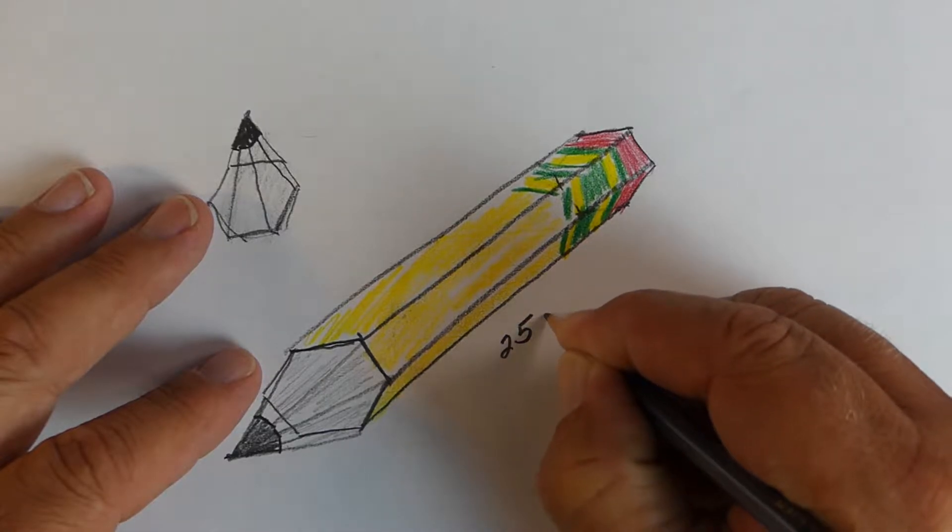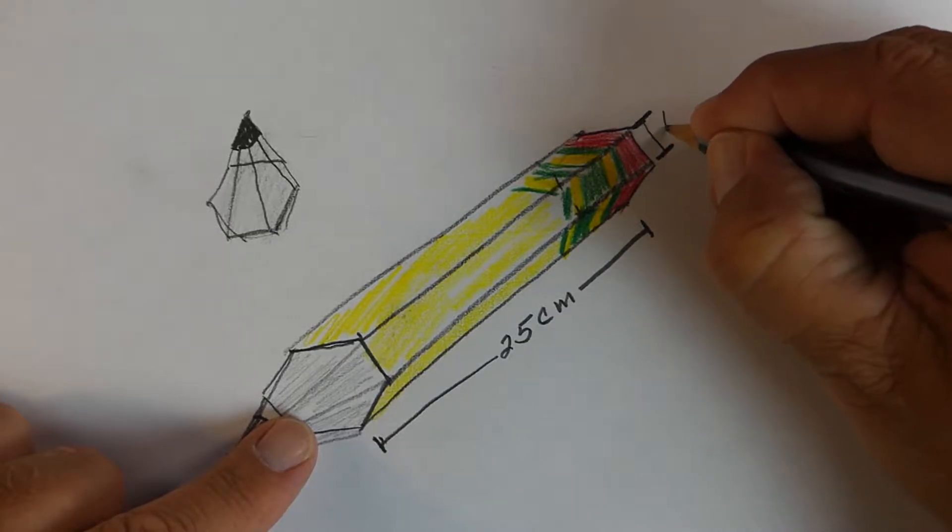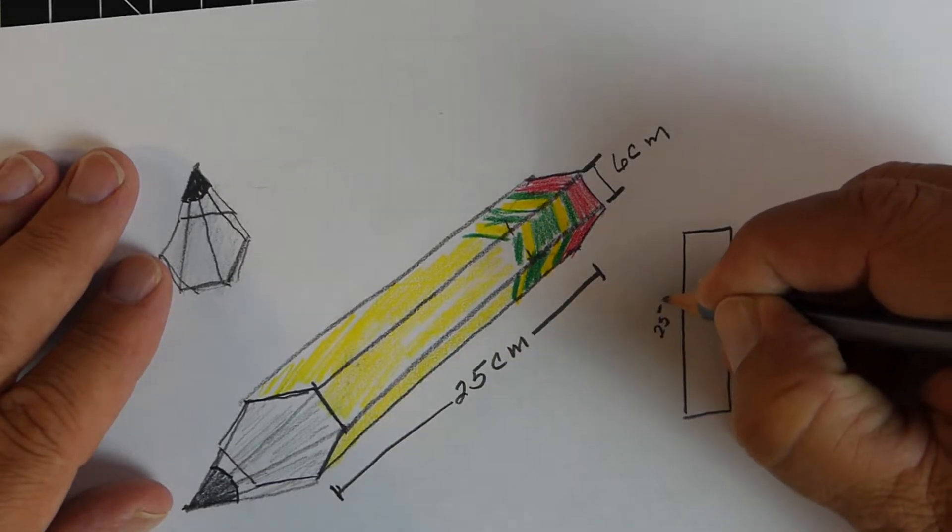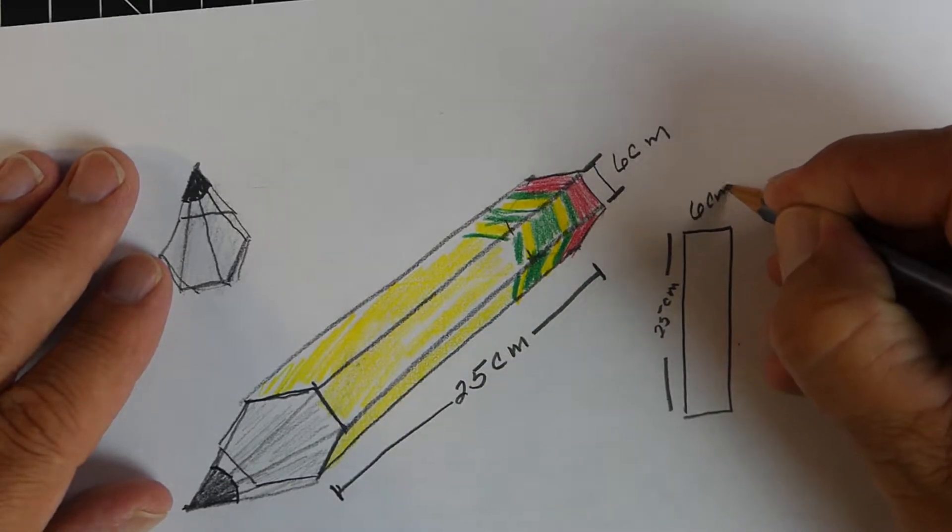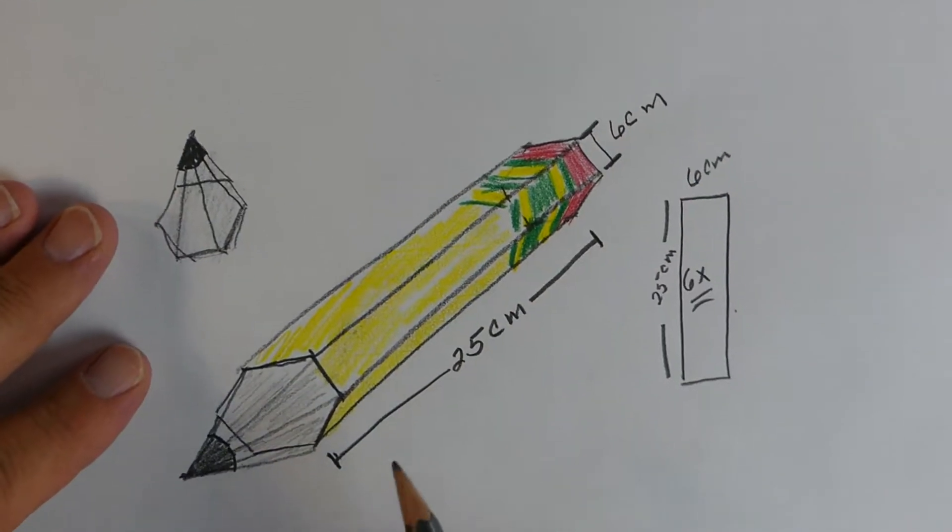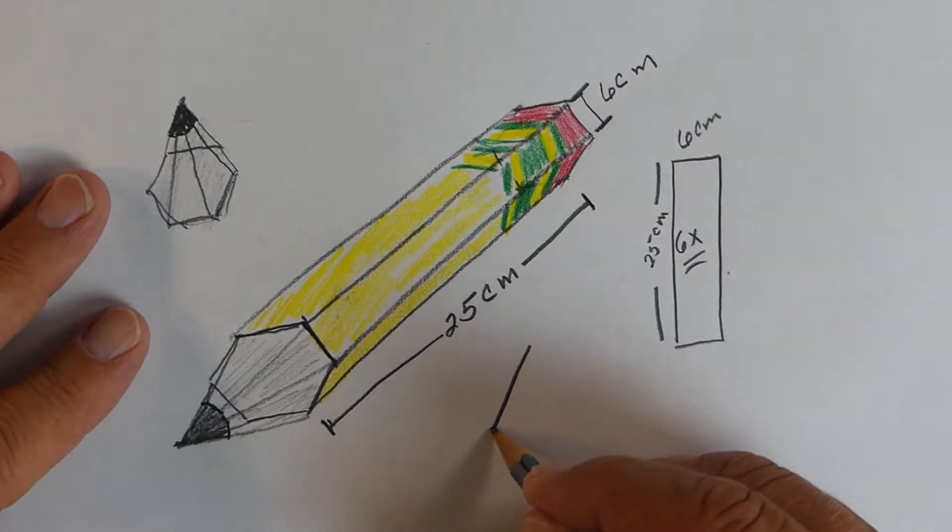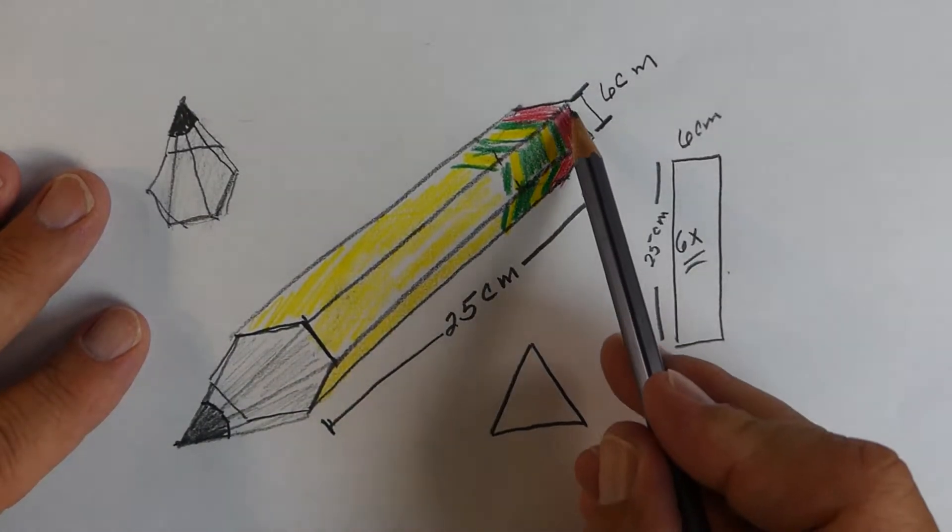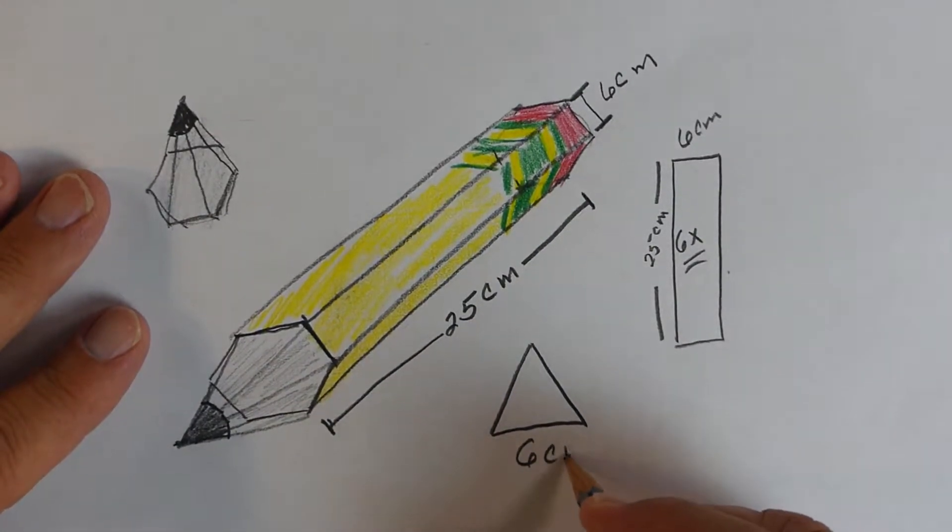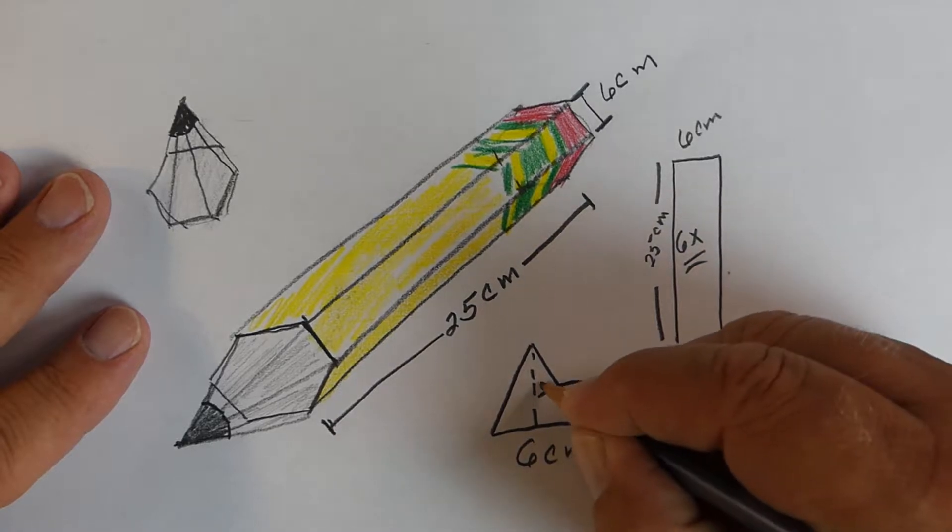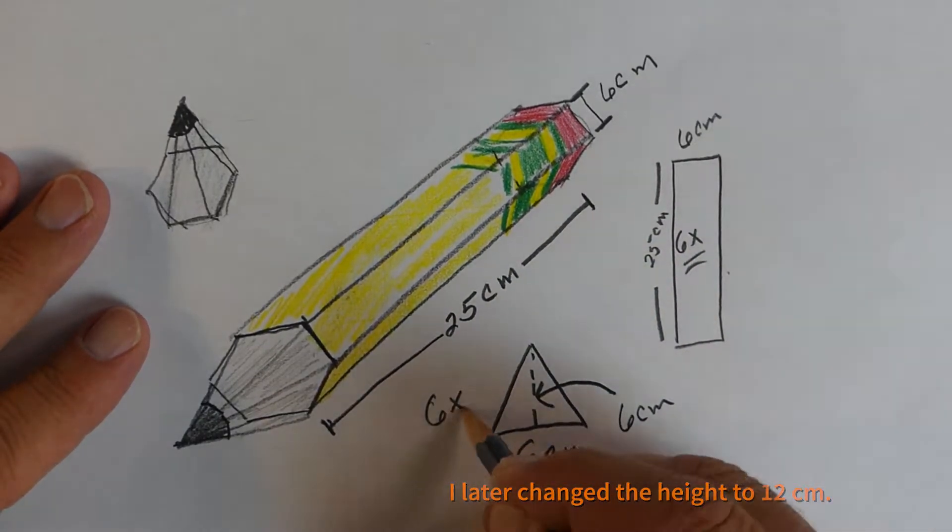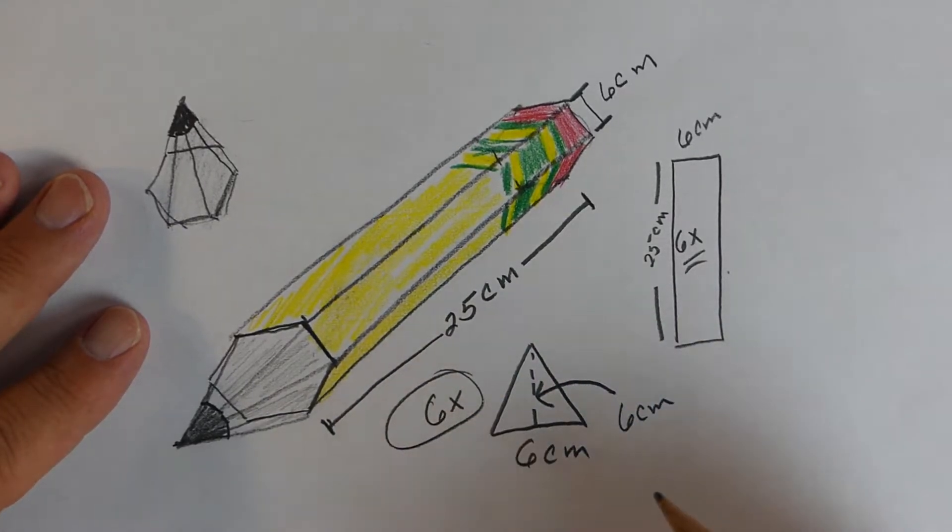What we're going to try to do is the body of it is going to be 25 centimeters. And since we're using a regular hexagon, I'm going to make each side equal to six centimeters. Now, what that means is I'm going to need six rectangles that are six by 25. The triangles that make up the hexagonal pyramid are going to have a base of six. And originally, I was trying to do a height of six. But the problem is when I made it later, it didn't look good. So we're actually going to go with 12.